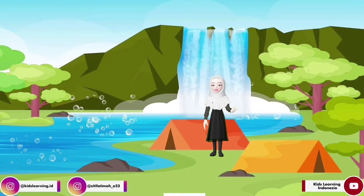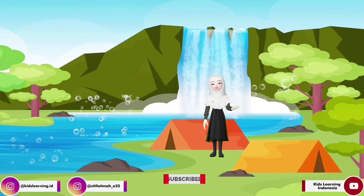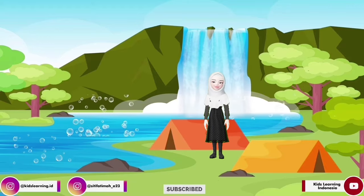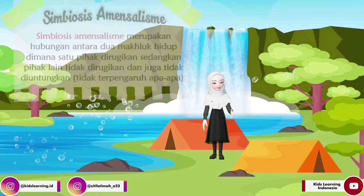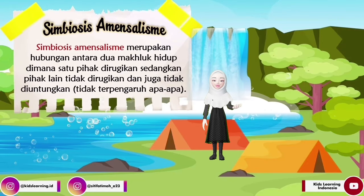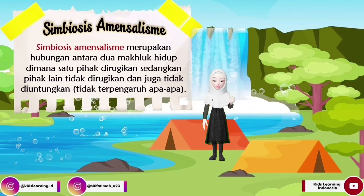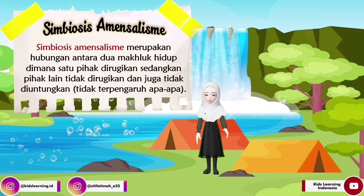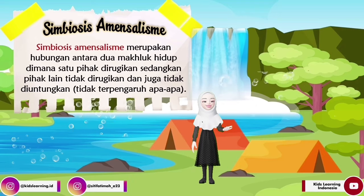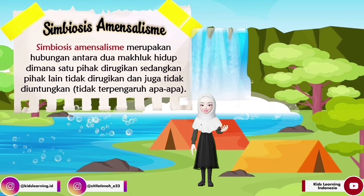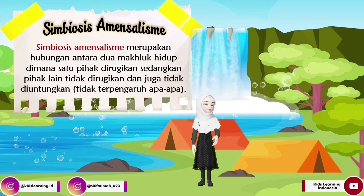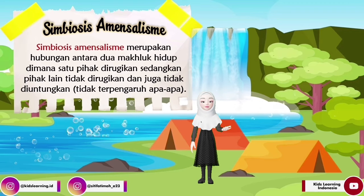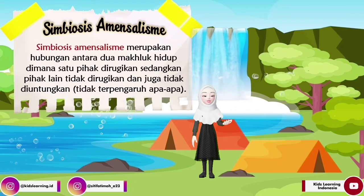Nah teman-teman, selanjutnya kita akan masuk ke pembahasan yang keempat. Di pembahasan ini teman-teman akan mengetahui penjelasan mengenai simbiosis amensalisme. Simbiosis amensalisme ini merupakan hubungan antara dua makhluk hidup di mana satu pihak dirugikan, sedangkan pihak lain tidak dirugikan dan juga tidak diuntungkan, atau dengan kata lain tidak terpengaruh apa-apa.